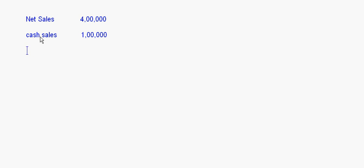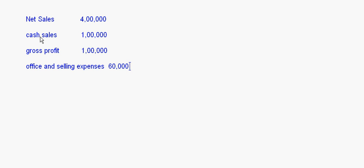Now let's take up a small question on operating ratio. The information given is: net sales is four lakhs, cash sales is one lakh, gross profit is one lakh, office and selling expenses is sixty thousand. We have to find out the operating ratio.